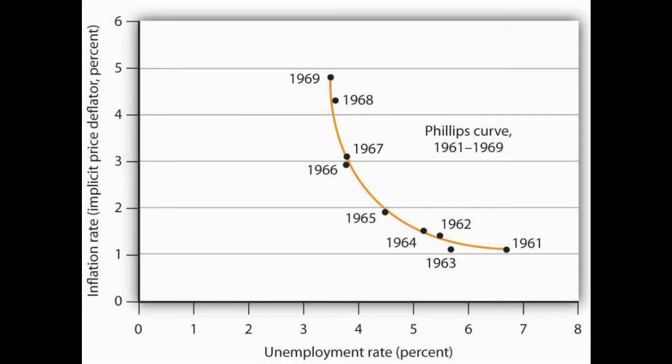Nothing else had really been experienced by modern economists. And the decade following the publication of Phillips' study was actually quite consistent with its findings. In the US, between 1961 and 1969, inflation and unemployment had a pretty predictable trade-off. But notice the concave shape of the curve demonstrates that the trade-off wasn't linear — the change in unemployment between 1968 and 1969 was much smaller than the change in inflation over that same period.